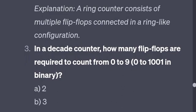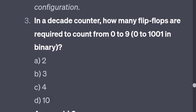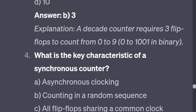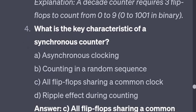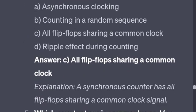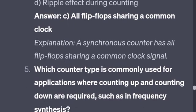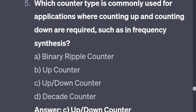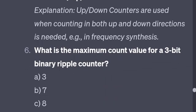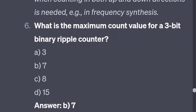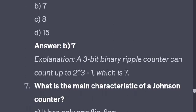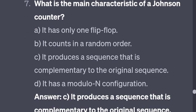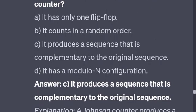In a decade counter, how many flip-flops are required to count from 0 to 9? The answer is 4 flip-flops. What is the maximum count value for a 3-bit binary ripple counter? The answer is 7. What is the main characteristic of a Johnson counter? It produces a sequence that is complementary to the original sequence.